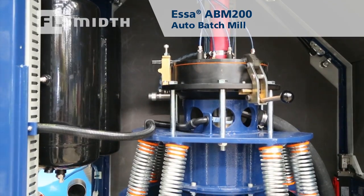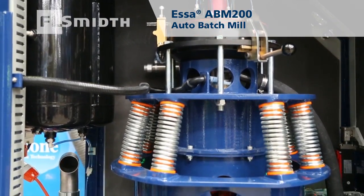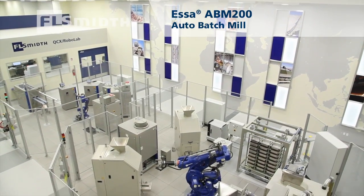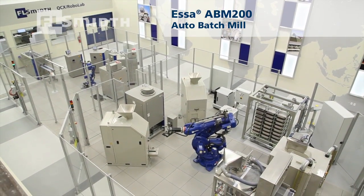The ESSA ABM200 auto batch mill is a versatile unit that can be installed as a stand-alone, manually operated machine or as part of a robotic cell.